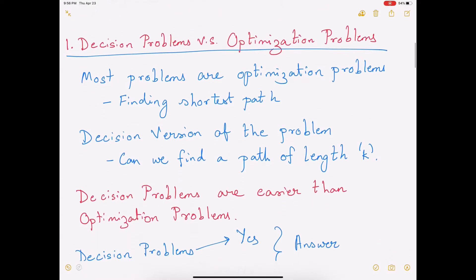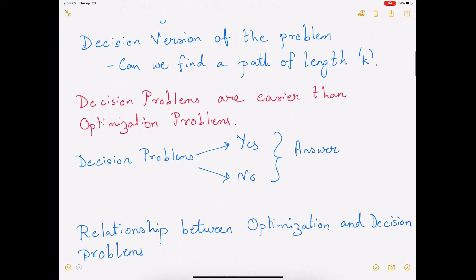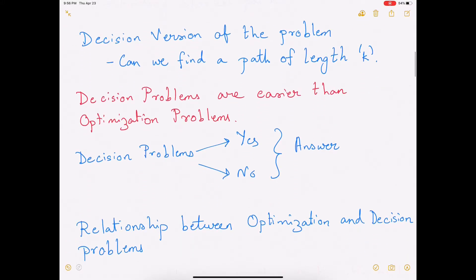Decision versions of a problem are easier than optimization problems. Instead of trying to find the shortest or the maximum, we're just trying to answer a question — in this case, whether a path of length k actually exists in this graph. Decision version problems are questions with yes or no answers.